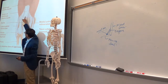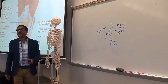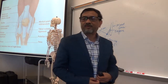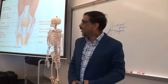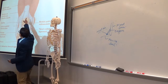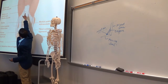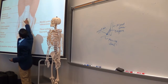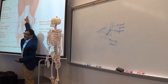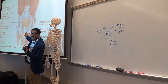Above the patella, this structure is called the quadriceps tendon, or tendon of quadriceps femoris. Why? Because this one is coming from the quadriceps muscles. Now, why is this called a tendon? And this one below is called a ligament. Same structure.